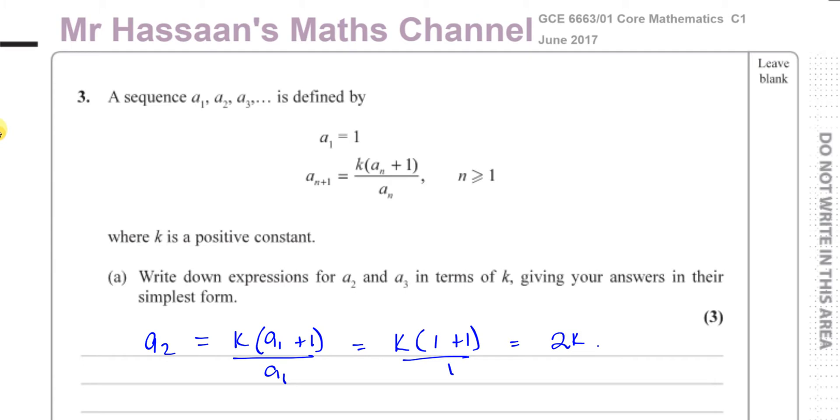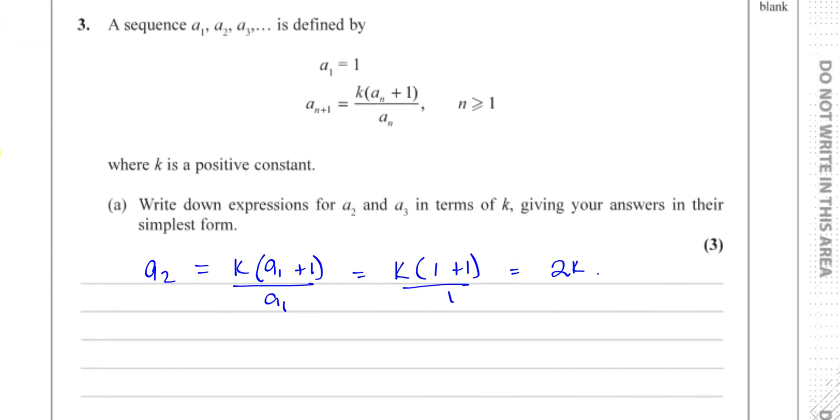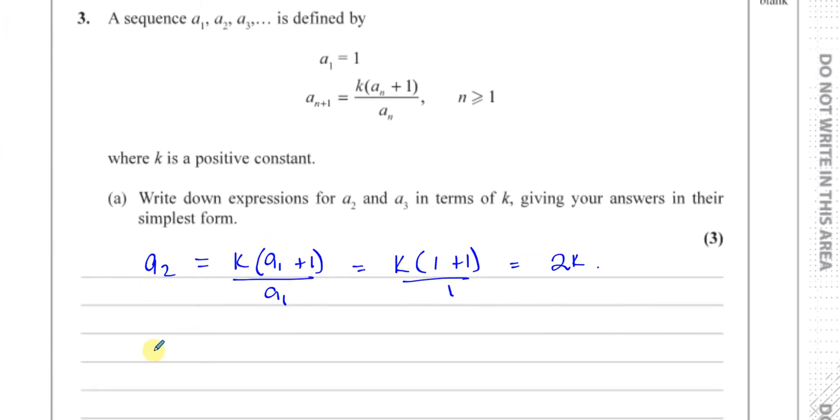We have to also do the same thing for a3. We have to find what a3 is. Now a3 is going to be k times a2 plus 1 over a2.